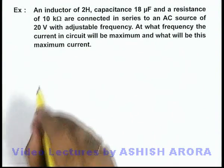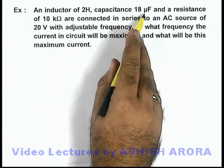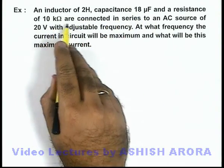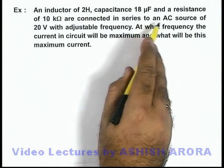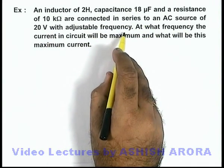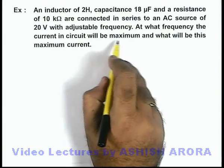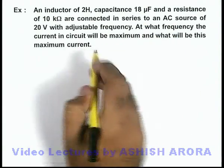In this example, we are given an inductor of 2 henry, capacitance of 18 microfarad, and resistance of 10 kilohm connected in series to an AC source of 20 volt with adjustable frequency. It is asking at what frequency the current in circuit will be maximum and what will be this maximum current.